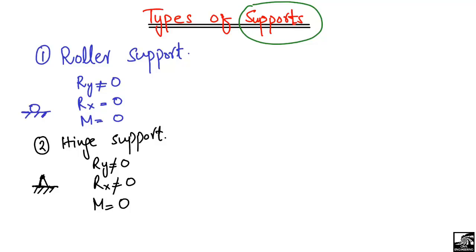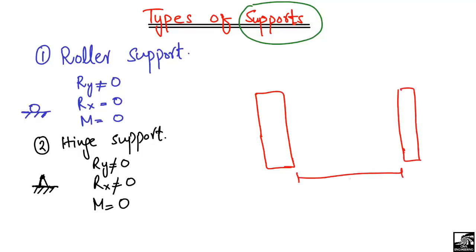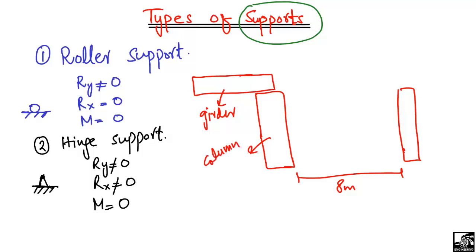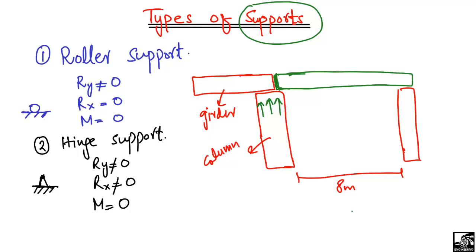To explain with an example: here we have one column, and here we have another column, with a distance of eight meters between them. We also have another beam or girder here, and these two are the vertical members which are the columns. Now when I place a beam here, this beam is supported on the columns. The vertical load of the beam is taken by the column, whether it's self-weight or live load.